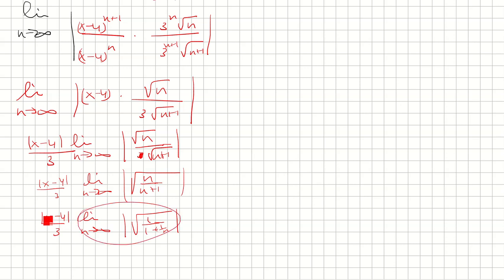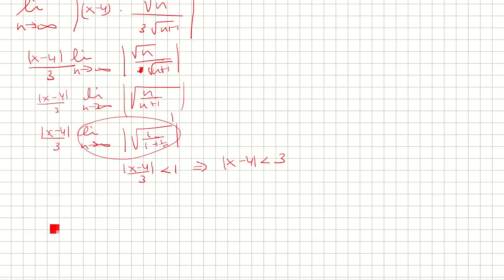So this whole limit equals 1. We have the absolute value of x minus 4 over 3, and you want this to be less than 1 for it to converge. So that means that if I multiply the 3 to both sides, we have the absolute value of x minus 4 less than 3. Remove the absolute value, we have x minus 4 between negative 3 and 3. Add 4 to both sides and get x is between 1 and 7.